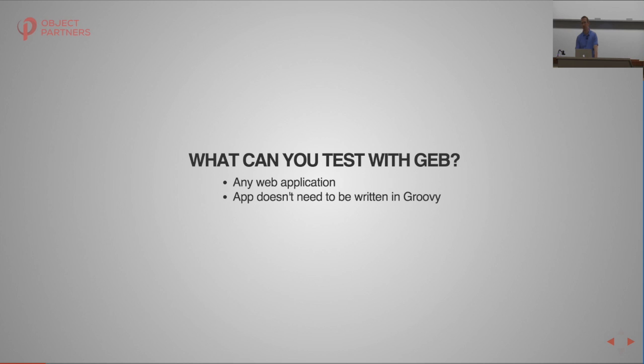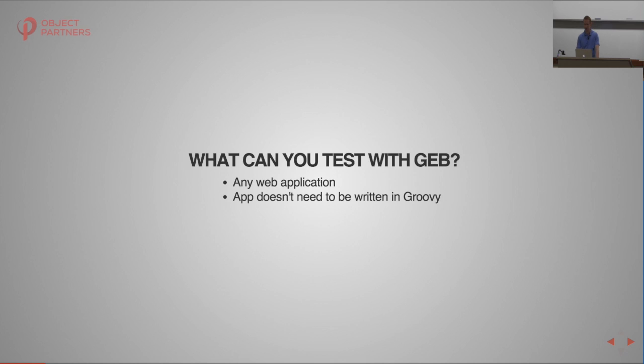While Geb is written in Groovy, your app itself doesn't have to be — it could be a J2EE app or some other system. Some folks use Geb to test JavaScript MVC framework applications. Similar to Spock, Geb can be a way to get Groovy into an organization: people start using it in their testing world, realize they like writing this code, and can transition it into their production code as well.